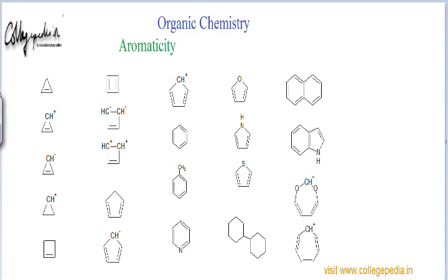The first thing you have to look into any molecule is whether it is planar or not. And if it is planar, then you will have to look for the number of pi electrons in the molecule. If it is 4n+2, then the molecule is aromatic. If it is 4n, then it is anti-aromatic.